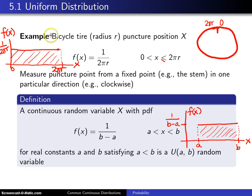This bicycle tire example was a special case of the general uniform distribution, where we chose A to be 0 and chose B to be 2πR.